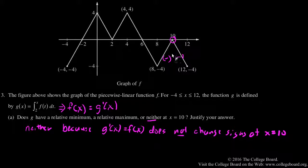G will be decreasing before and decreasing after x equals 10, so it won't hit a maximum or a minimum.